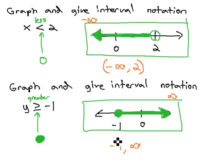Because we're actually equal to the negative 1, we'll use a square bracket to show we hit that value. Infinity, however, always gets a curved bracket, because we can never actually hit infinity.